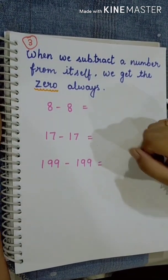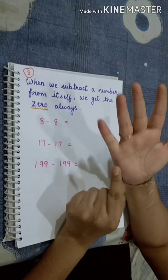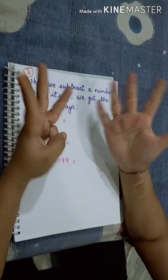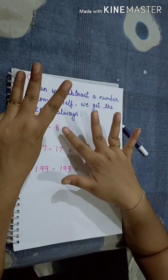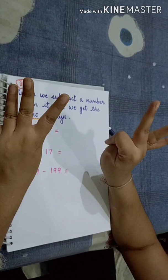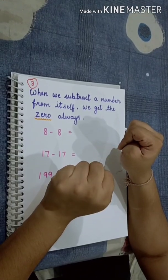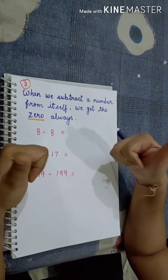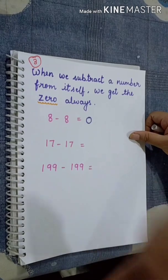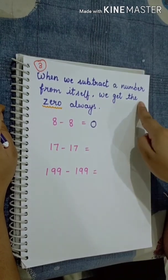Let's count 8 on our fingers: 1, 2, 3, 4, 5, 6, 7, 8. We have 8 fingers. And we have to subtract 8 — that means we have to hide 8 fingers: 1, 2, 3, 4, 5, 6, 7, 8. How many fingers are left? 0. That means 8 minus 8 is equal to 0. So that is proved — when we subtract a number from itself, we always get 0.